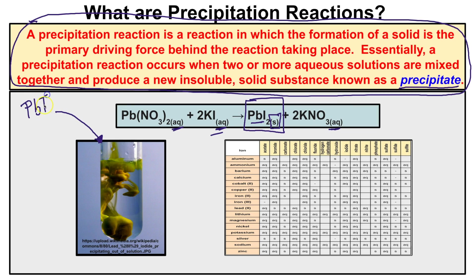This yellow insoluble solid substance is your precipitate — your lead(II) iodide. Anytime you have two aqueous solutions producing a solid material, you have a precipitation reaction, and it is the formation of that solid that is the primary driving force. When dealing with precipitation reactions, it's always important to have a solubility table showing the solubilities or insolubilities of different compounds in water, along with your periodic table of elements.